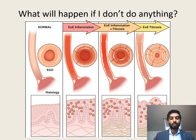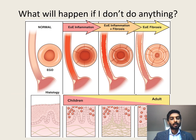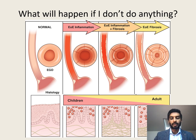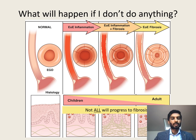Under the microscope we see not only the red eosinophils but also a lot of scar tissue. These different phases of the condition take many years to occur, so in children we see less scar tissue and more just an inflamed esophagus, whereas in adults we mostly see the scarring occur. It's also important to note that not all patients will progress down this path — there may be some adults who've had the condition for many years who don't have a scarred and narrowed esophagus.